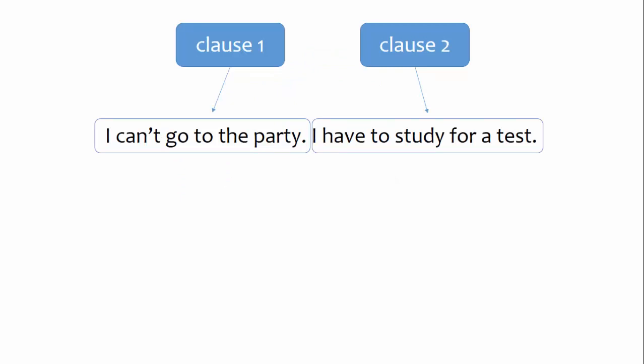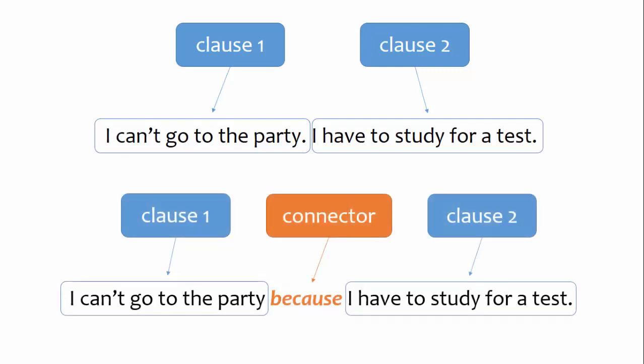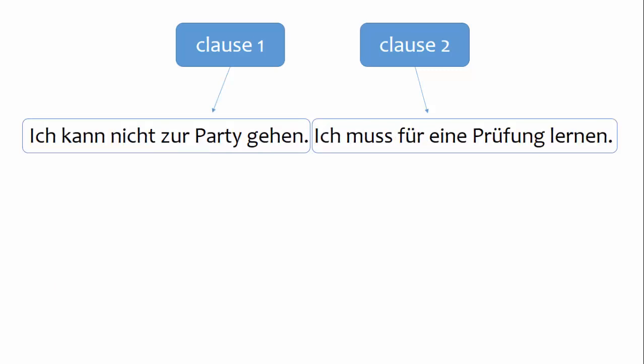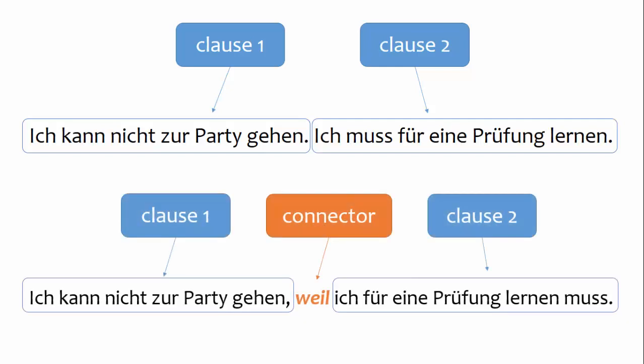In English, you can connect two clauses using what I like to call a sentence connector. The connector shows the relationship between the two clauses. The same is true in German. At the top of your screen, you see two independent clauses. You can add a connector to link the two clauses — the connector shows the relationship between the first clause and the second.